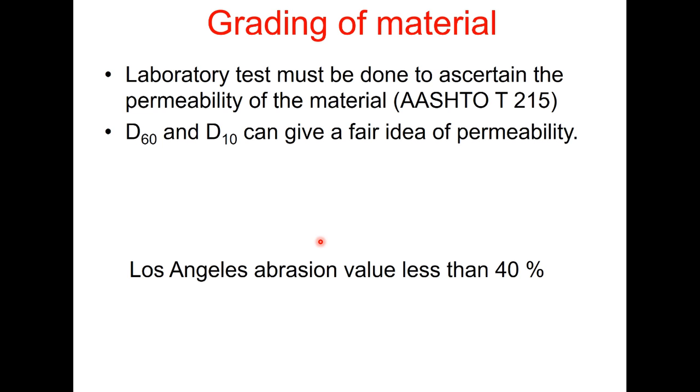Laboratory tests must be done to ascertain the permeability of the material and that can be done using the method given in AASHTO T215 but if this test is not available or conducting of permeability test is not possible then two parameters D₆₀ and D₁₀ can give a fair idea of permeability. Now D₆₀ is effective size of aggregate corresponding to 60 percent passing and D₁₀ is the effective size of aggregate corresponding to 10 percent passing. The coefficient of uniformity that is D₆₀ upon D₁₀ is also calculated and that should be in the range of 2 to 8. The physical property is determined based on Los Angeles abrasion test and this value should be less than 40 percent.